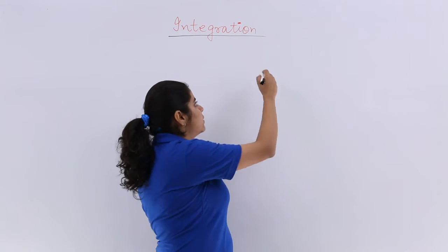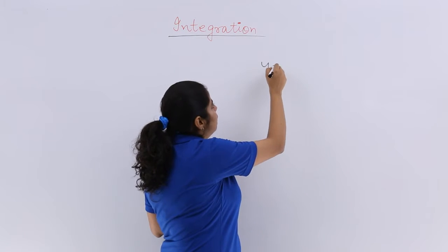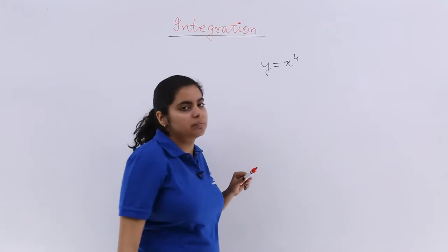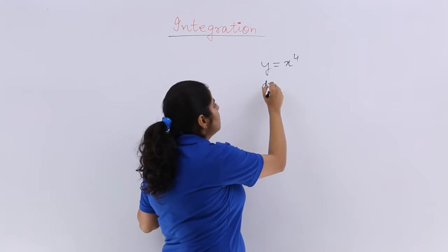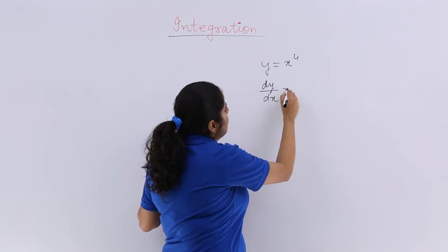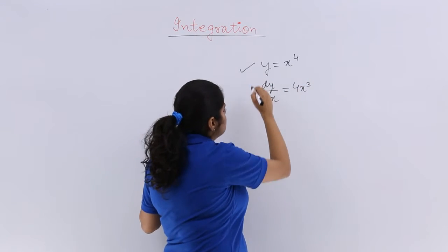I start with an example. Suppose I have been given a function y and it is x raised to the power 4. Now y equals x raised to the power 4. What is my dy by dx? It is nothing but 4x cube, that you must know.